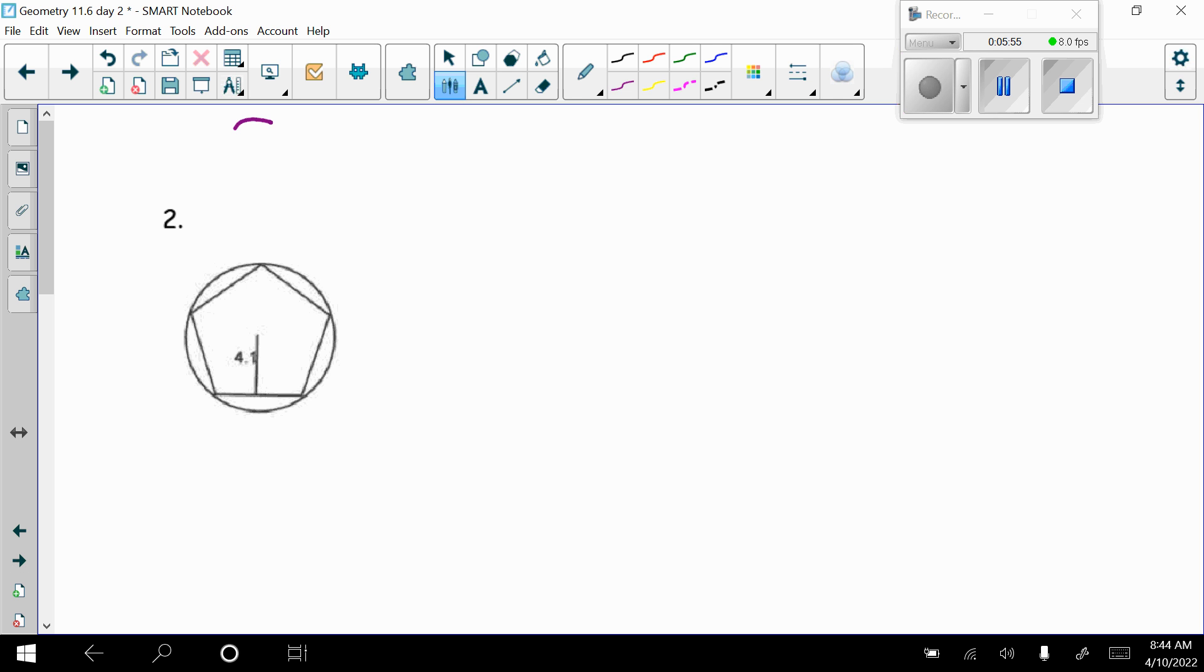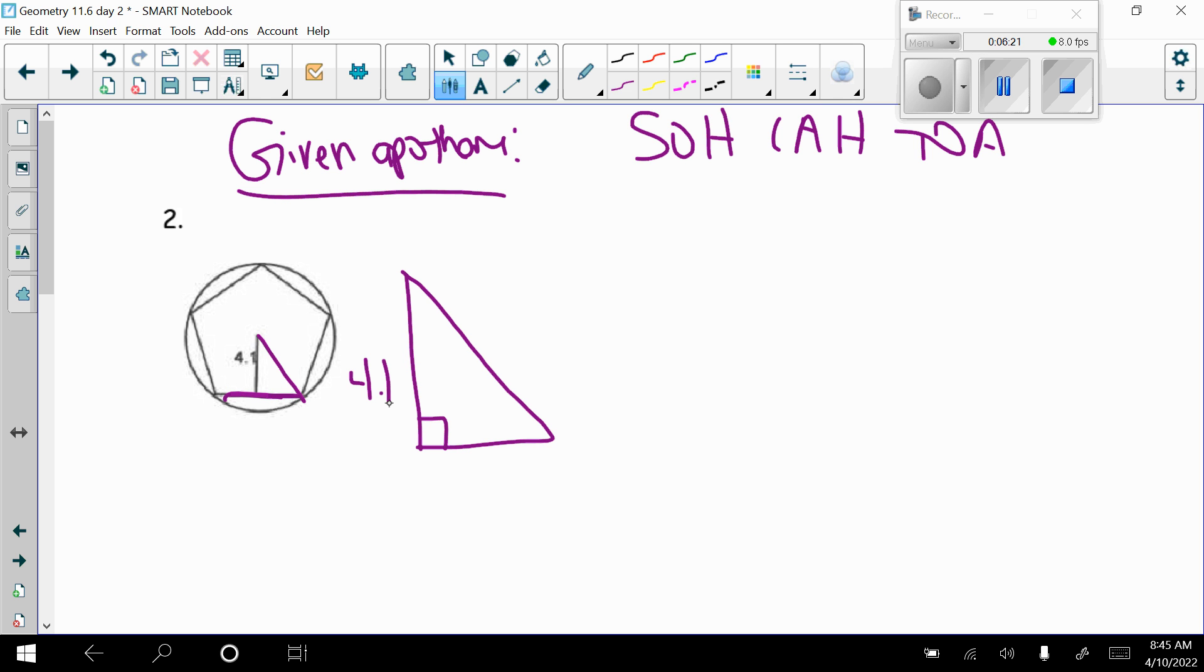So now let's go to the back. This time, we are given an apothem. We're going to look to see what do we have to do. So if I'm given the apothem, all I need is my base, right? So we're only going to have to do SOHCAHTOA one time if what they give me is the apothem. So again, I'm going to go ahead and draw this triangle out. So this is the triangle I'm looking at. This is 4.1. I'm looking for my base.